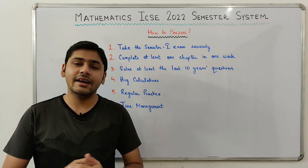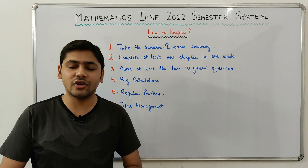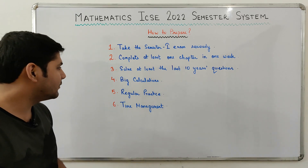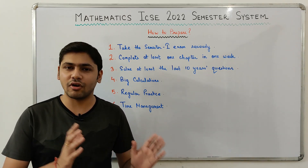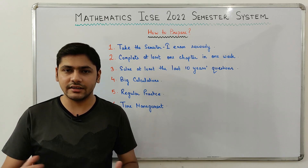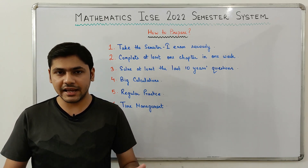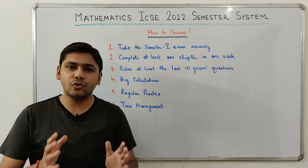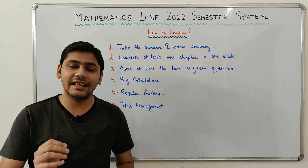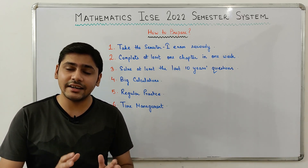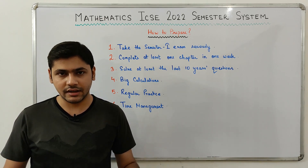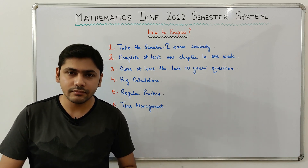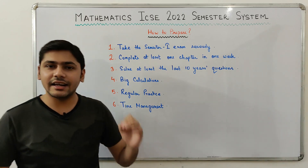The next point: solve at least the last 10 years' board questions of each chapter once you finish it. That will help you understand what type of questions will be asked. Next, check big calculations — whenever you do any big calculation such as large division, multiplication, or decimal operations where errors can be made easily, check that calculation right then and there so you can rectify any error immediately and minimize silly mistakes.